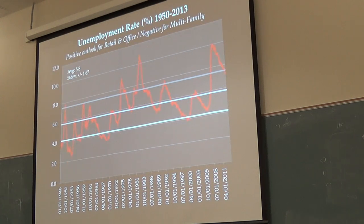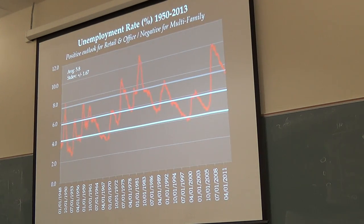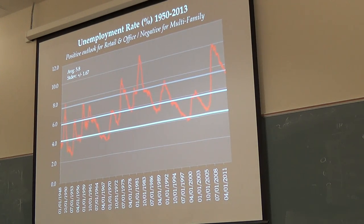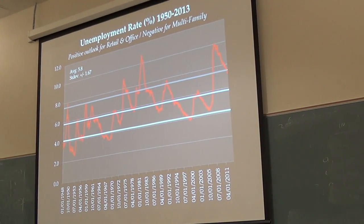This takes us to looking at unemployment overall. We know unemployment is going down, so what does that mean for each property type? For retail, unemployment going down is good. For office space, it's good too. But for multi-family, if people are getting more jobs, are they more likely to rent or more likely to purchase a home? It's somewhat negative for multi-family. That's our industry outlook from a macro perspective as far as multi-family is concerned.